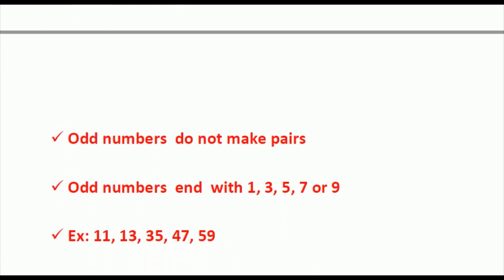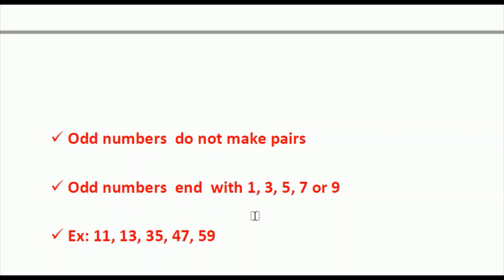The points here are: first, odd numbers do not make pairs. Second, odd numbers end with 1, 3, 5, 7, or 9.